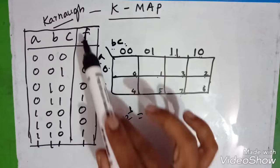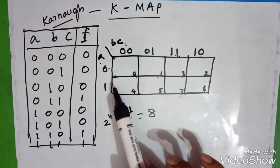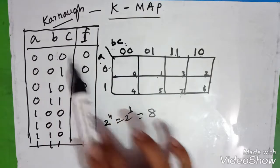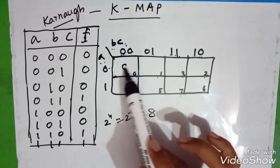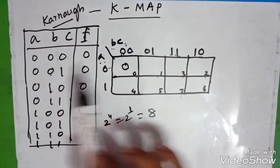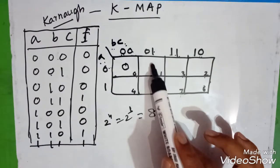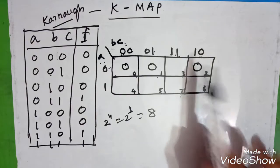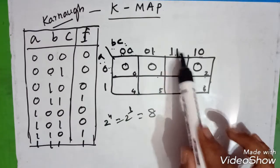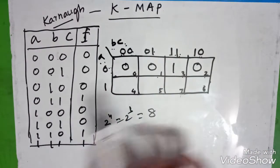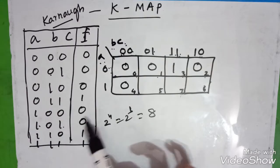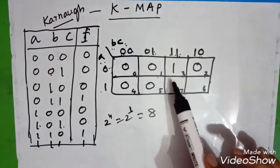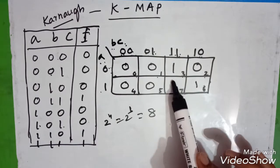Now enter the f, that is the output of the truth table. 000, abc it is 000. 001 it is 0. 010 is 0. 011 it is 0. 100 is 1. Then 101, 110, 111 is again 1.